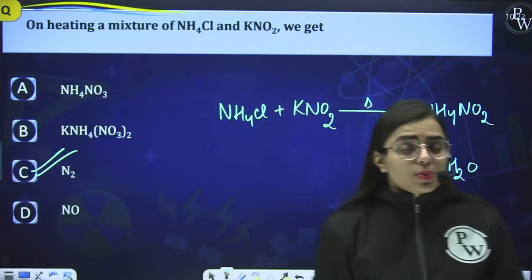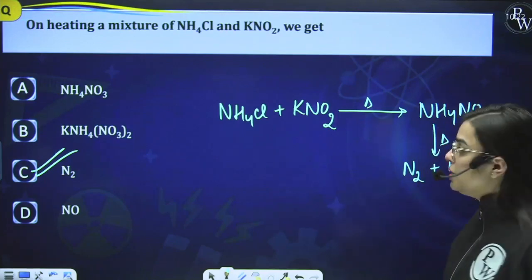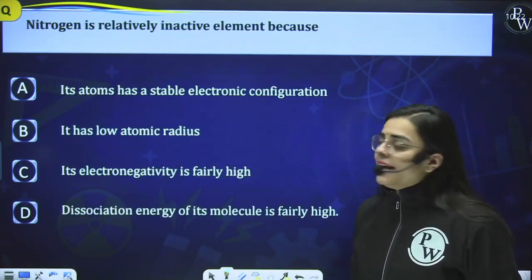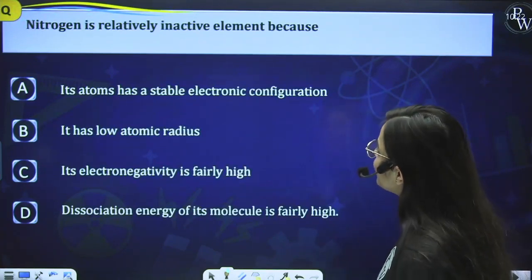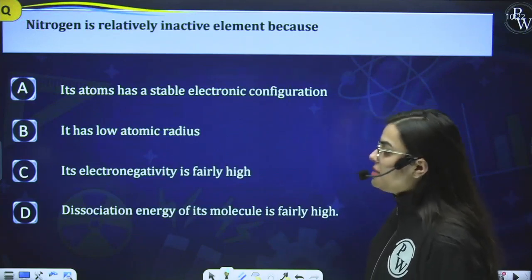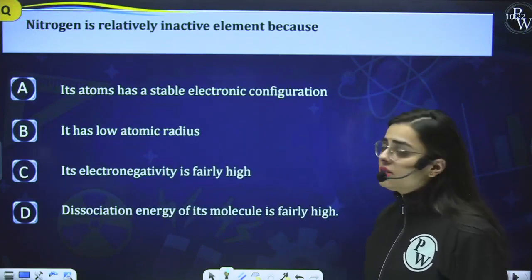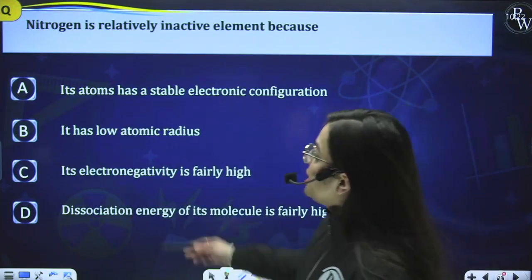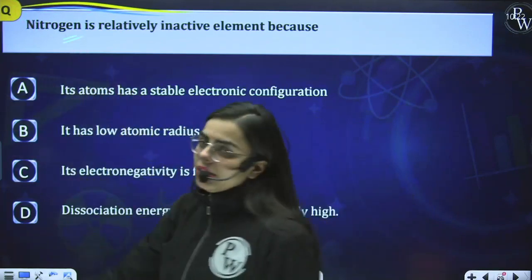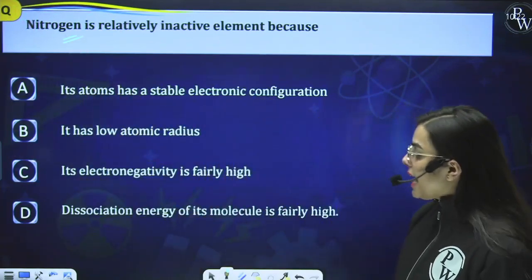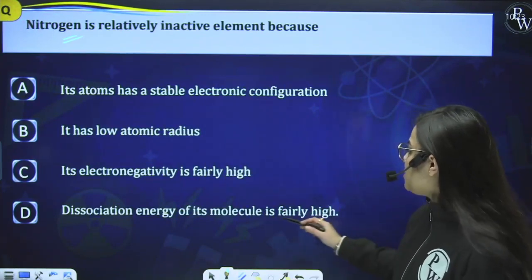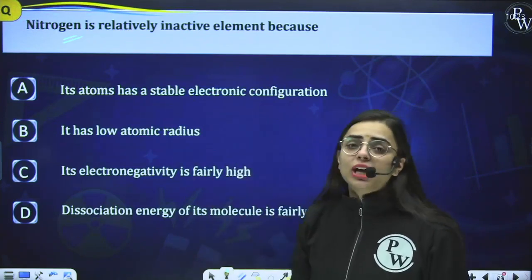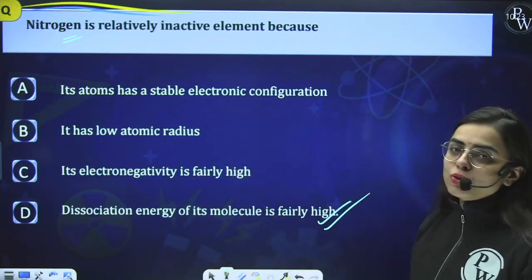Question 2: Nitrogen is relatively inactive because — option D — the dissociation energy of its molecule is fairly high. Nitrogen forms a triple bond, and I told you it has a very high dissociation energy. So the answer is option D.